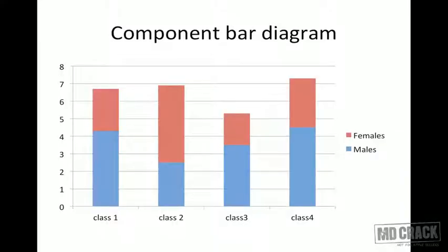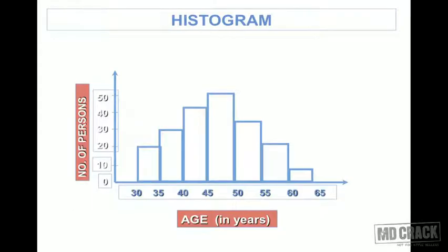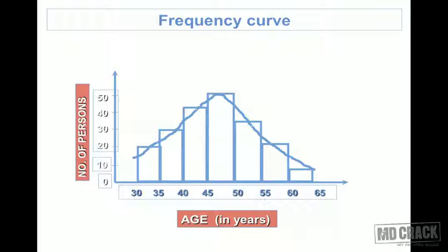A component bar diagram has multiple components in a single bar. A percentage bar diagram is a special type of component bar diagram where everything is expressed in percentage, so every bar goes up to 100% with fractions within. A histogram is used when you have class intervals with adjacent boundaries — for example, 0–10, 11–20, 21–30. A pi diagram is like a pizza slice. A frequency curve is made by joining the midpoints of the histogram bars into a smooth curve.